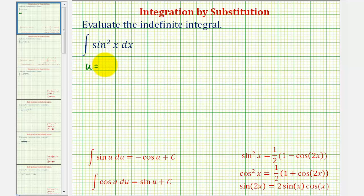If we let u equal sine x, notice that differential u is equal to cosine x dx. And because our integrand does not contain cosine x, this u substitution will not work.